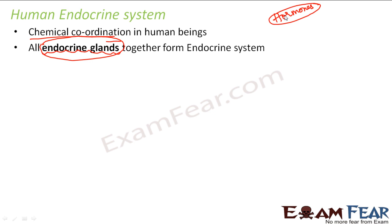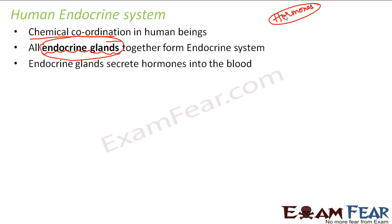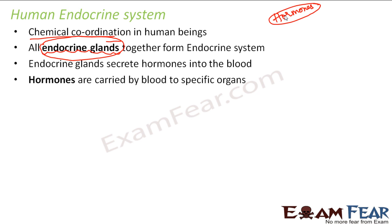First we talk about glands, then endocrine glands, then hormones. These endocrine glands secrete hormones into the blood, and these hormones are carried by the blood to specific organs. That is how information transfer takes place — the hormones are the chemicals that carry information from one part of the body to another. So the endocrine glands produce hormones, release them into the bloodstream, and blood carries them to the specific target organs.